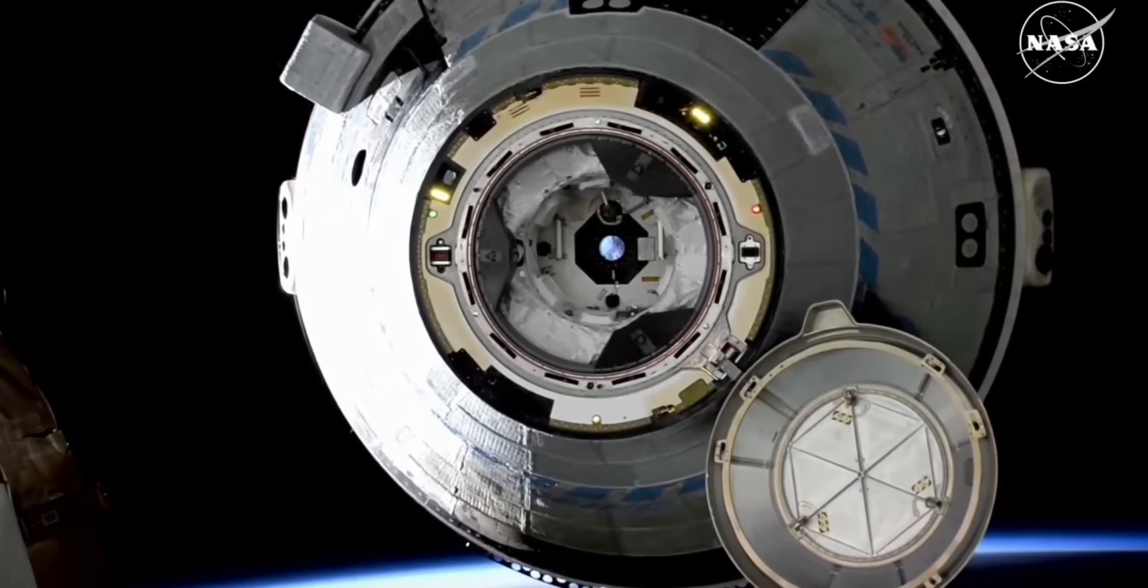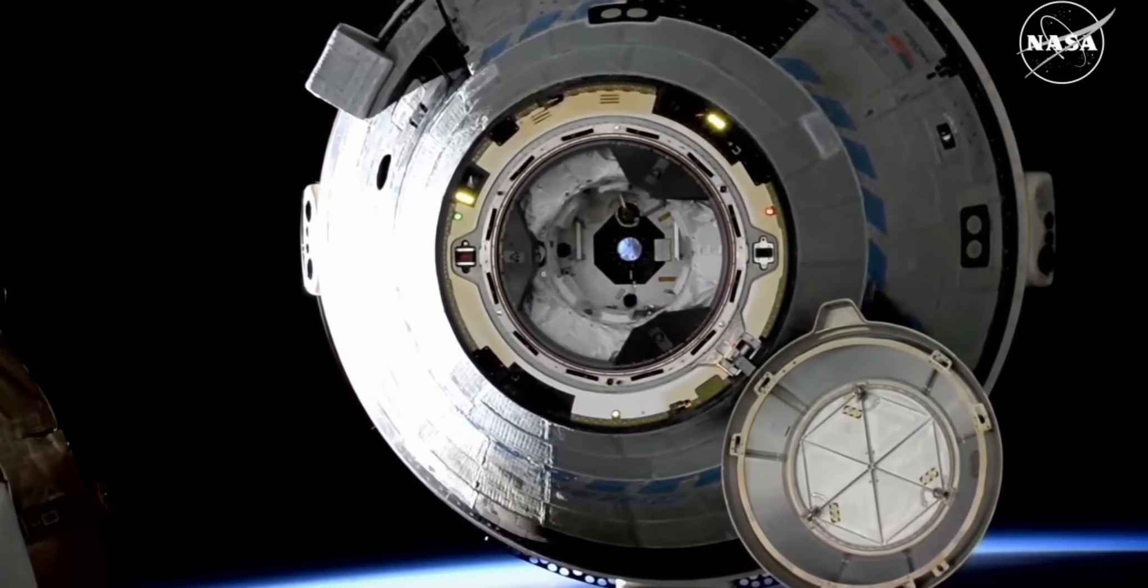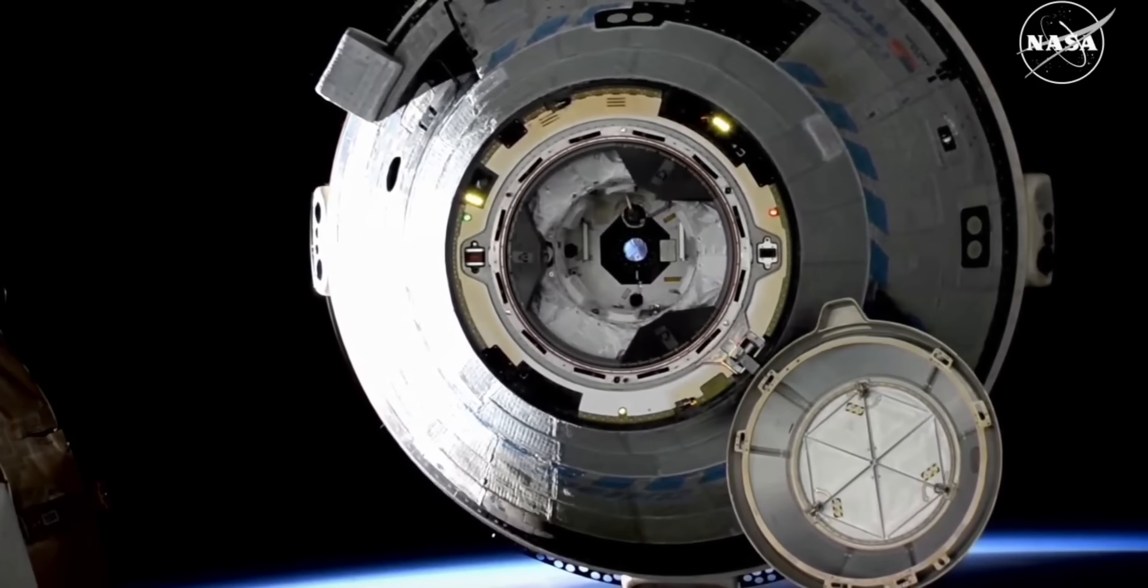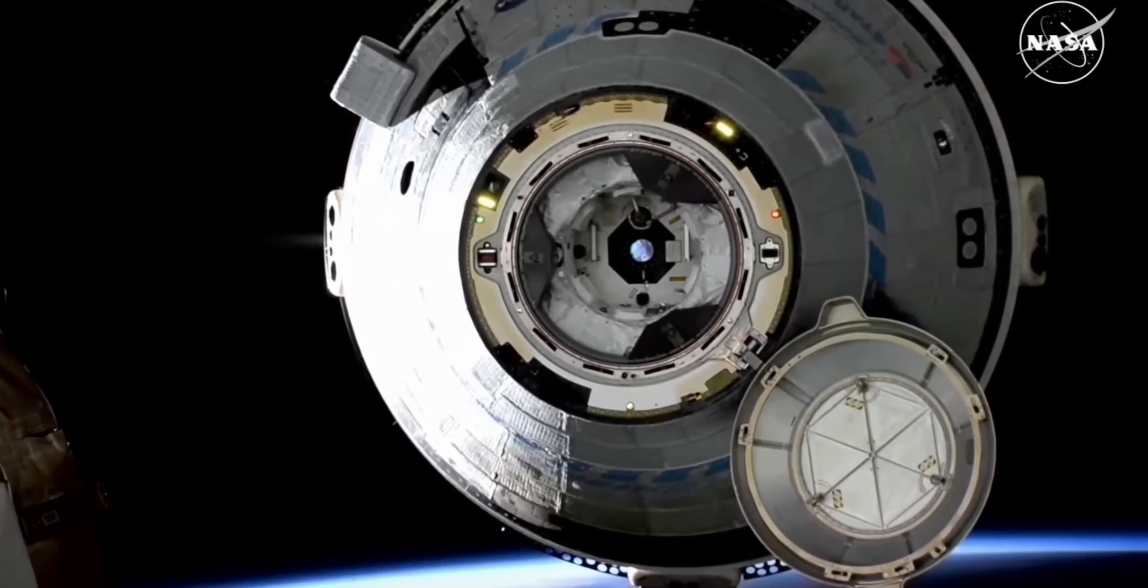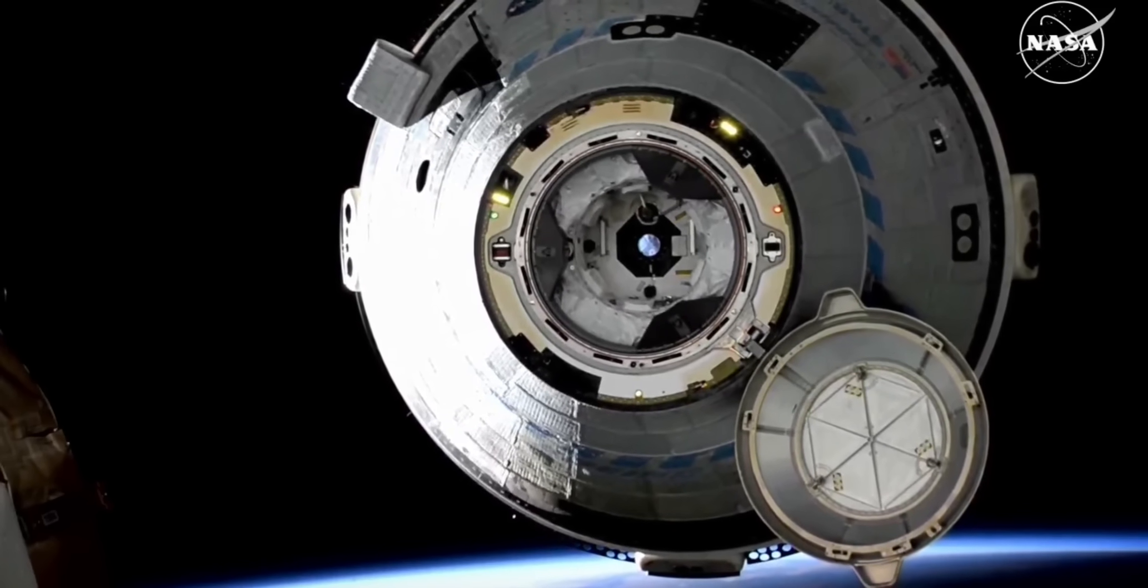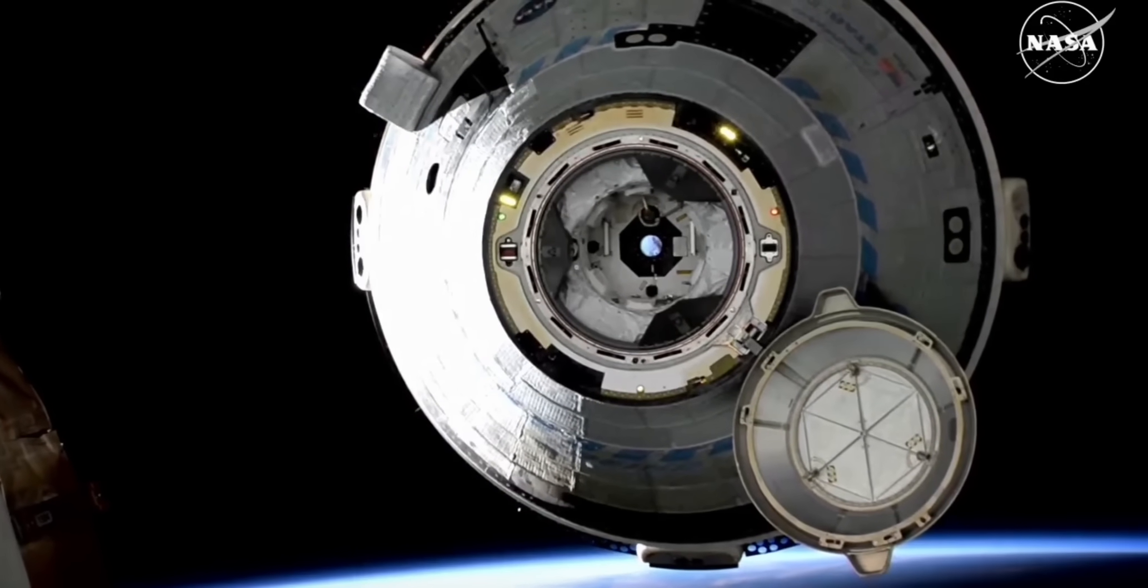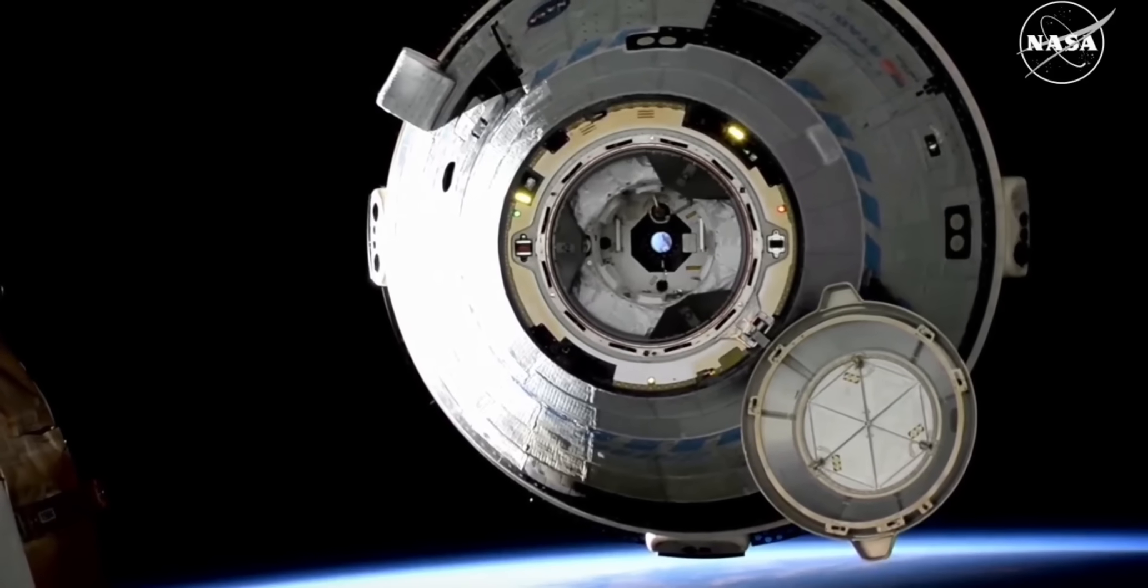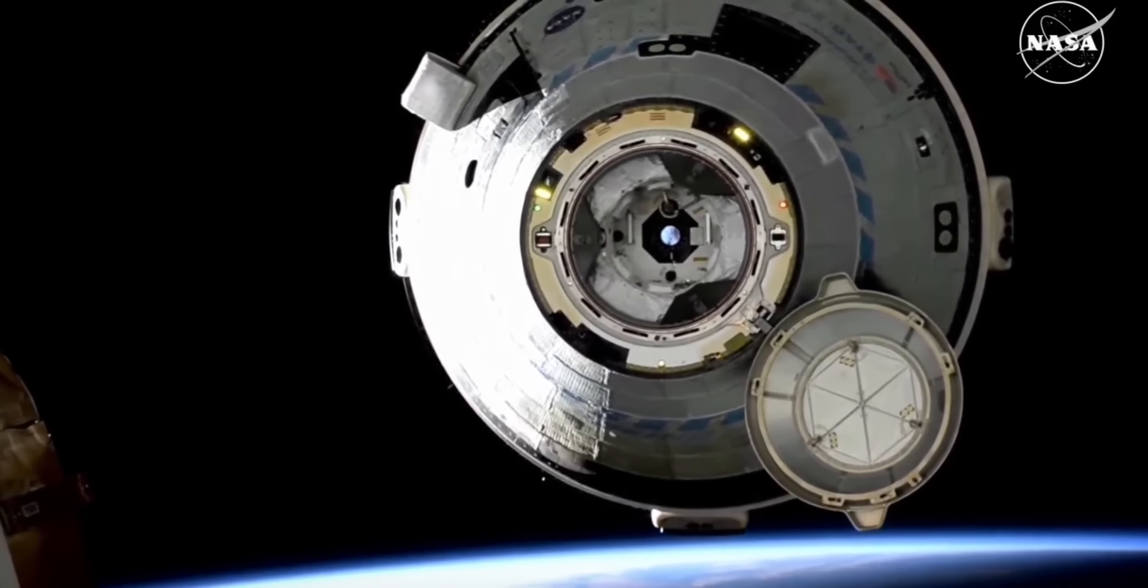About four minutes into the burn sequence, Starliner will exit the keep-out sphere or the KOS. You can see those thrusters firing there on the left of your screen as Starliner backs away from space station.